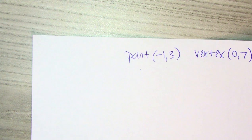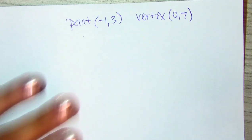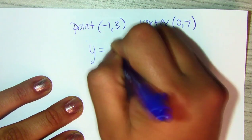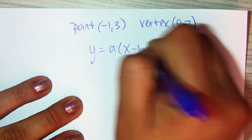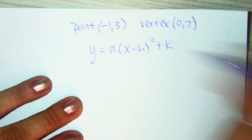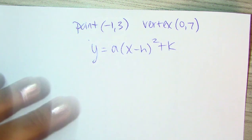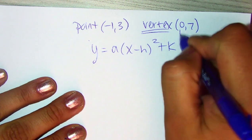So, because they specifically said vertex form, you're going to start with that template: A, X minus H, squared plus K. And recall that vertex will always be your H and K.